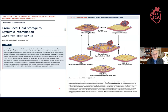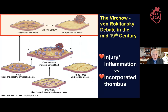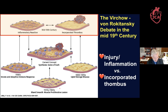Let's start hundreds of years ago when there was a pitched battle between Virchow — Rudolf Virchow — and Von Rokitansky about the pathogenesis of atherosclerosis. Virchow, on the basis of careful observation, had deduced that atherosclerosis actually had some aspects of inflammation, and he called it an Entzündungsreaktion, very clearly in the middle of the 19th century.